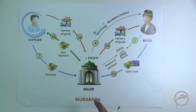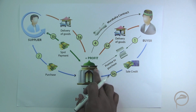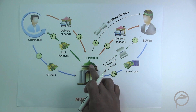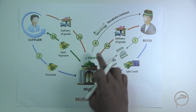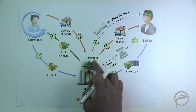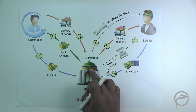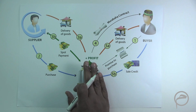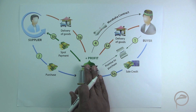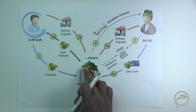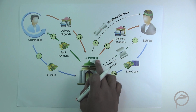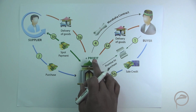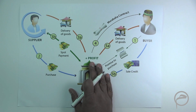In a Murabaha, the bank is obligated to make known to the customer the amount of profit the bank is making on the transaction. In a Musawama transaction, the bank is not obligated to make the customer know about the amount of profit the bank is making on the transaction.